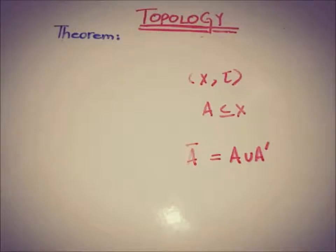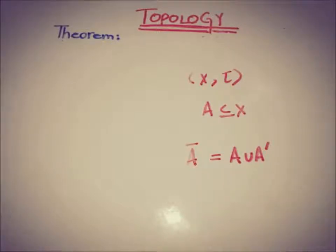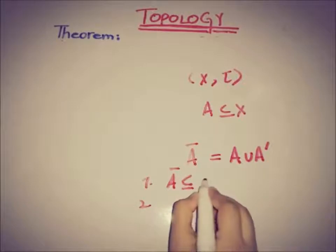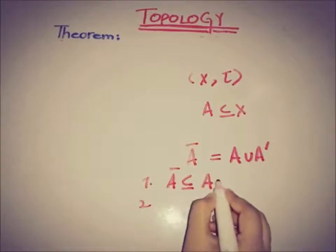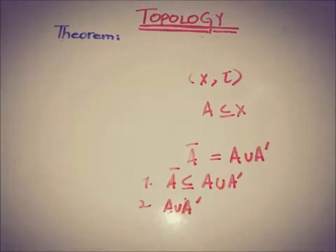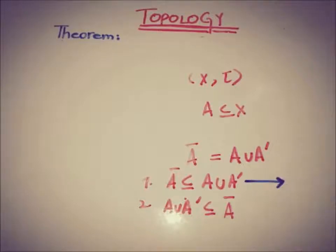This is a very important relation between closure and the accumulation points or the accumulation set. Now we will see how to prove this, because we have to prove the equality relation between A-closure and this set. We will use two parts for this theorem. That is, we have to prove A-closure is a subset of A union A-prime, and second, we have to prove that A union A-prime is a subset of A-closure.